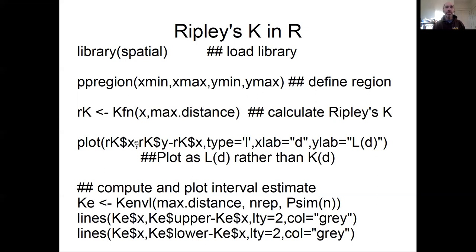So I'm just plotting the X and the Y of the Ripley's K statistic itself as a line labeling the X and the Y. So here it's saying I'm plotting L(d) rather than K(d).